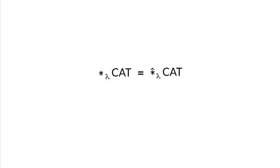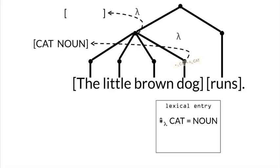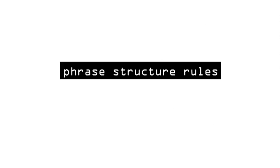Where does this equation go? We will avoid trying to paste it directly into our constituent structure, as that would be problematic. Technically, a node is just a position in the structure. What we can do instead is make this equation part of our generalizations about what type of constituents are allowed in this language. These generalizations are called phrase structure rules.